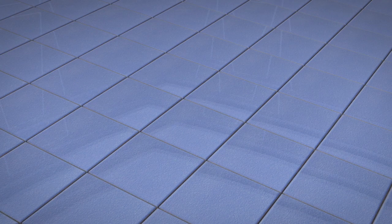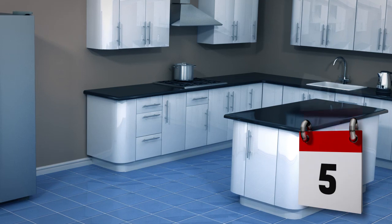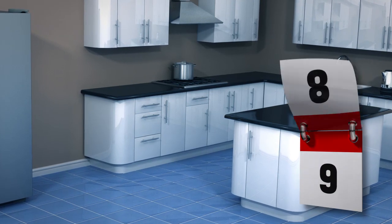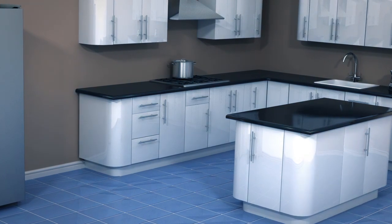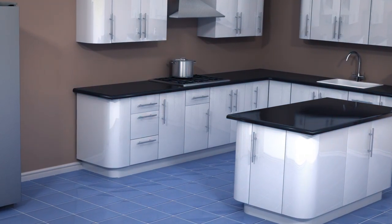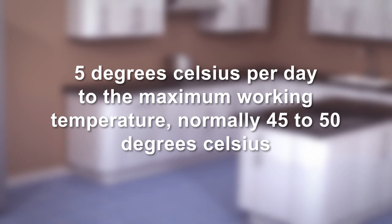Grout the tiles using Ultra Tile Flex Joint Grout. Allow to fully cure before trafficking. The underfloor heating system should not be brought into service for at least 14 days. After this time, the water temperature should be brought up gradually by 5 degrees Celsius per day to the maximum working temperature, normally 45 to 50 degrees Celsius internal pipe temperature.